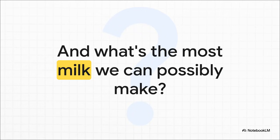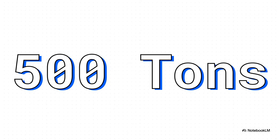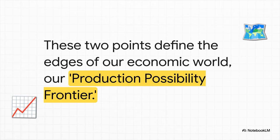Now let's flip it. What if we go all in on milk instead, dedicating all 100 workers to nothing but dairy production? 100 workers, each producing five tons of milk, gives us a grand total of 500 tons. We've now found the two extremes: either 200 tons of wheat and zero milk, or 500 tons of milk and zero wheat. These two points define the boundaries of our entire economy. The line that connects them shows every possible combination we can produce using all of our workers efficiently. In economics, this line is called the Production Possibility Frontier, or PPF for short.